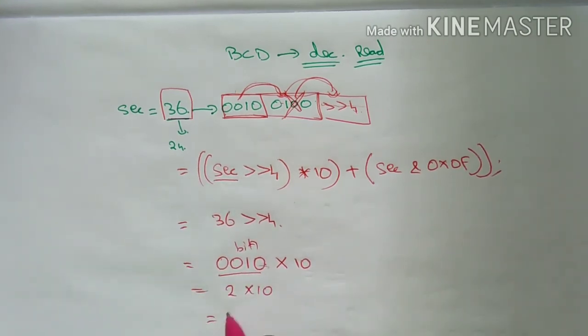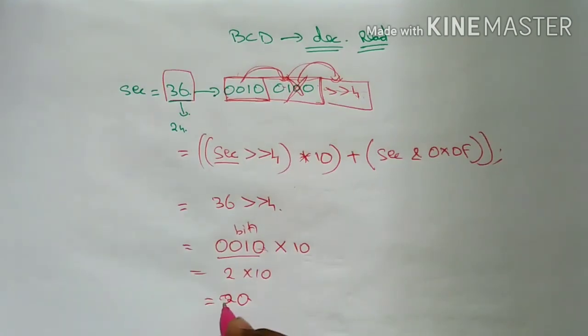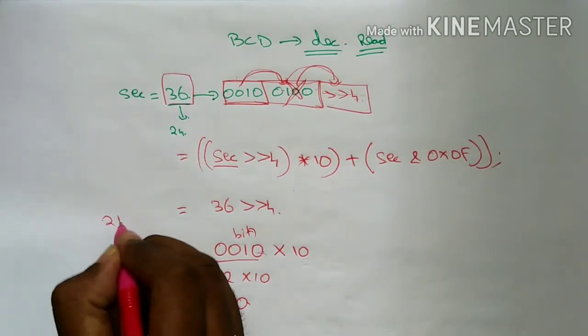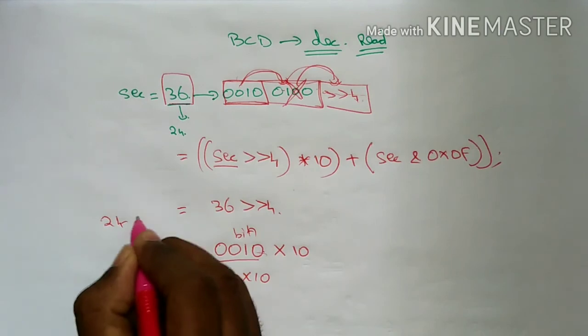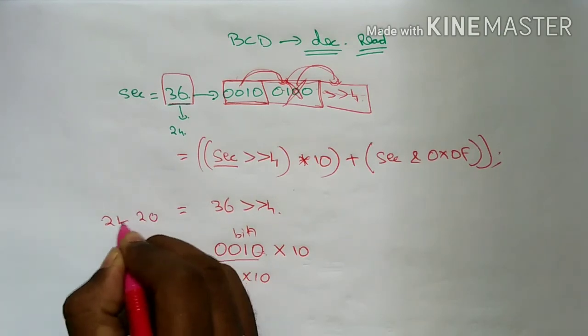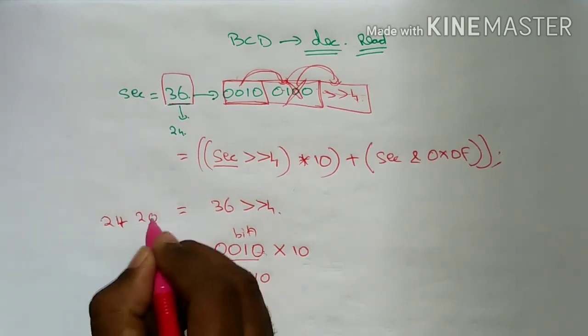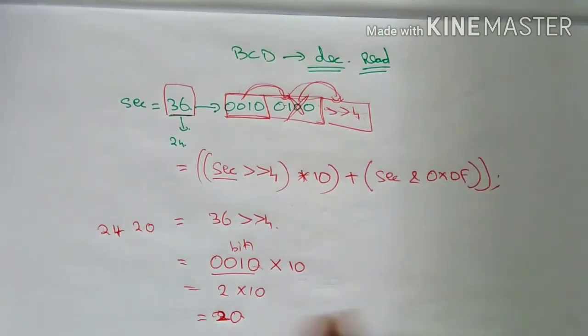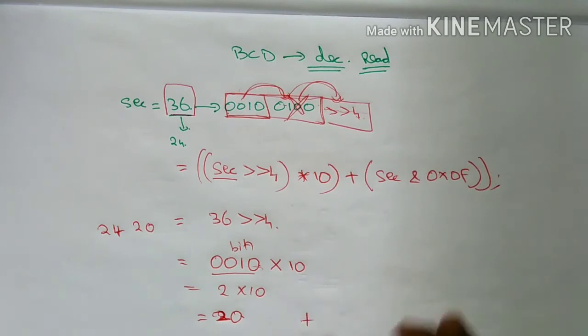So 20 is going to be 20. So 24 is going to be 20. Now the answer is 4, plus 20 is going to be 20.